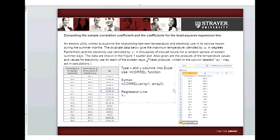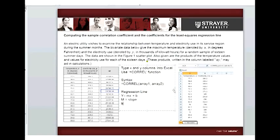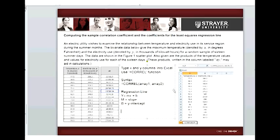we have Y equals MX plus B, where M equals the slope and B equals the Y intercept. Well, we have Excel formulas for those as well.